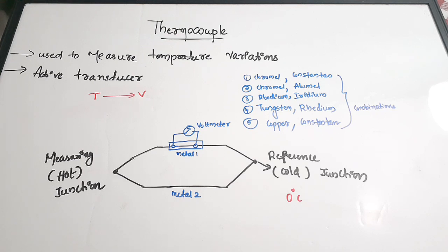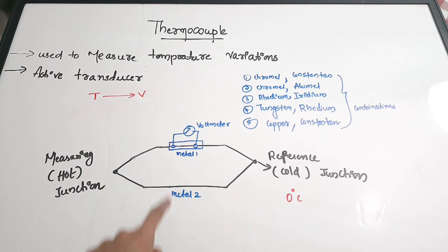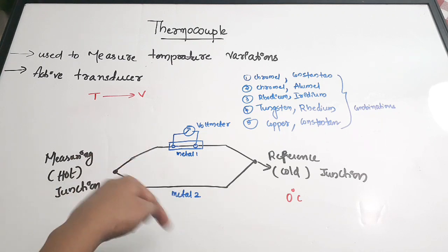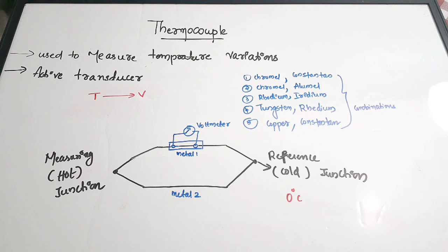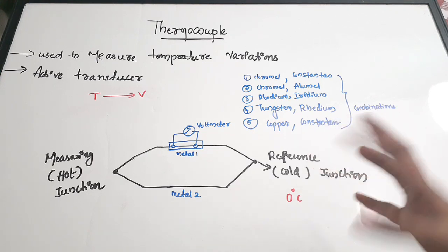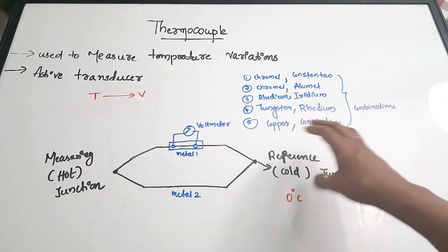For better understanding, we will discuss the three effects. First is Seebeck effect, then Peltier effect, then Thomson's effect. When discussing these effects you will get a clearer picture of how the thermocouple actually works. Also, the metals used must be dissimilar — if the metals are of similar kind, it does not form a thermocouple.